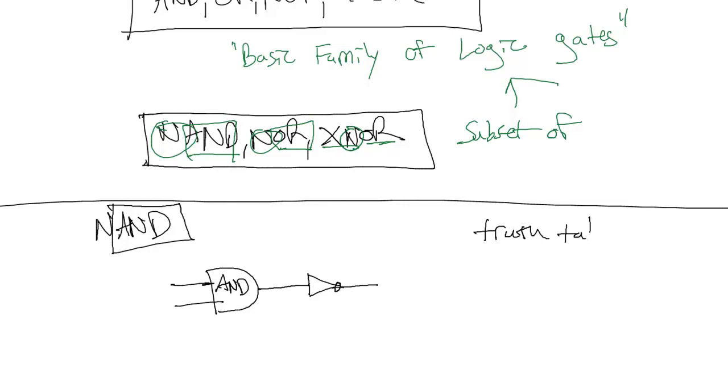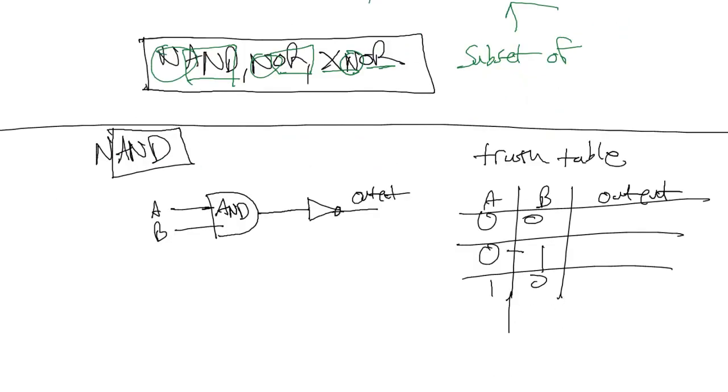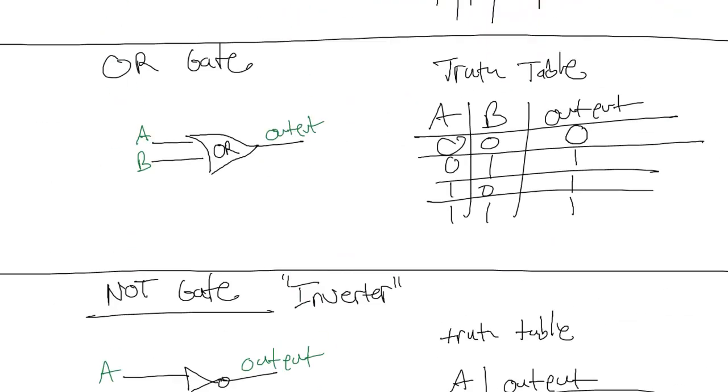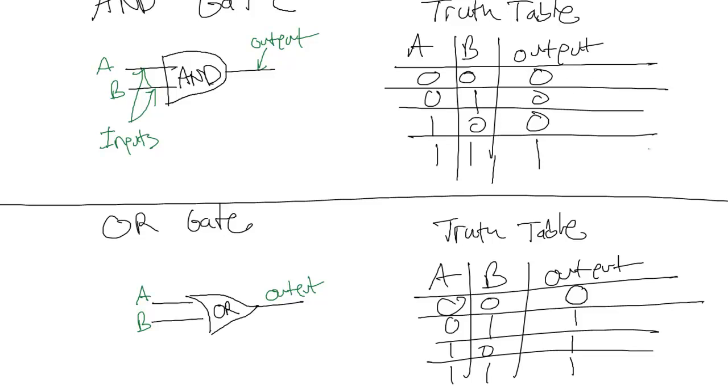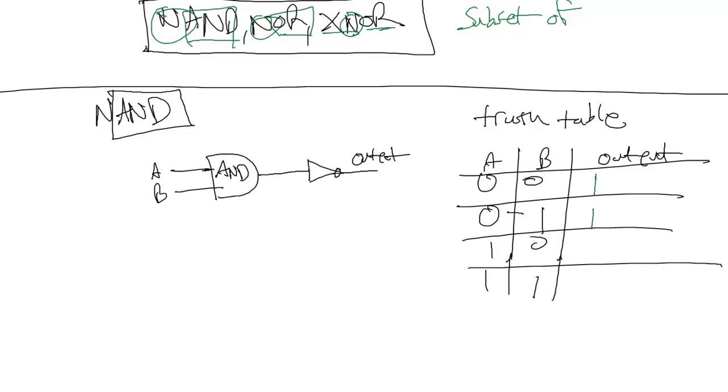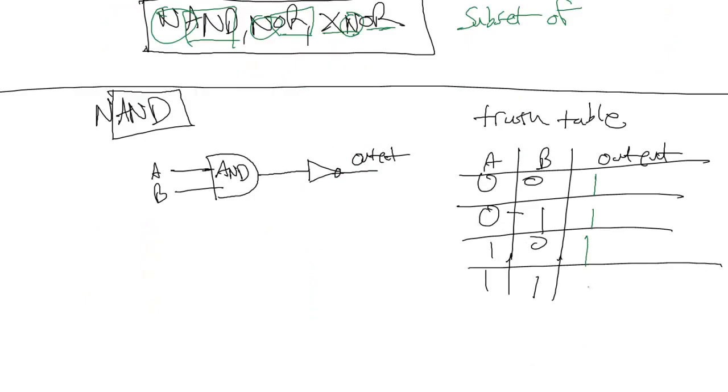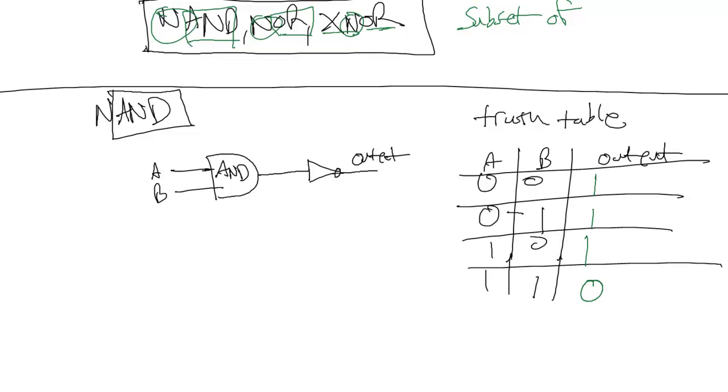And what that does is inverts all the outputs. So if we go back to our truth table, let's call this AB output. All possible combinations. The output here is going to be the same as the AND table that we did originally. But we're going to invert all of these bits. Because we have an inverter. So if it was 0, it's going to be 1. If it's 1, it's going to be 0. So 001 is going to turn into 1, 1, 1. 1, 1, 1, 0.